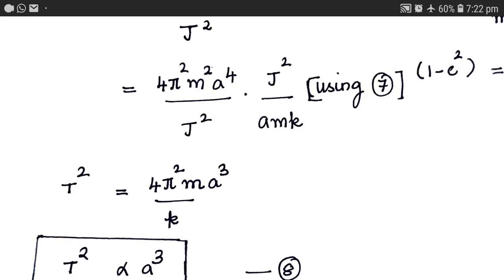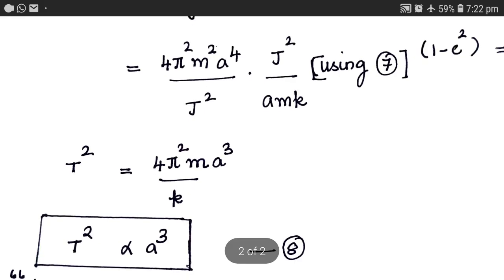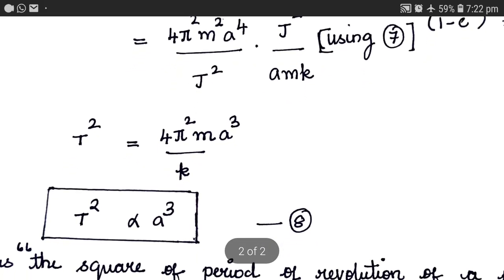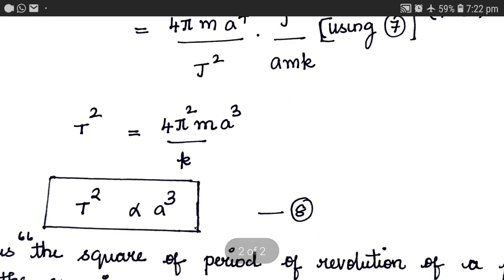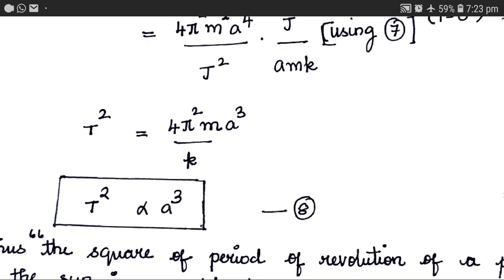In this expression, 4 pi squared, M, and k are all constants, so we replace them with a single constant. We get T squared equals a constant times a cubed. Replacing the constant with a proportionality symbol, we obtain T squared is proportional to a cubed. This celebrated result is Kepler's third law of planetary motion.